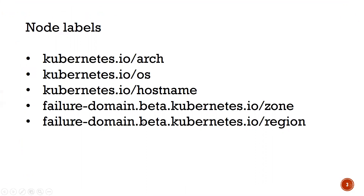The first three labels are architecture, OS, and hostname. These are definitely there for every node when you attach it to the cluster. Depending on how you create your cluster, additional labels may exist — for example, if you used a cloud provider, nodes might have tags like zone or region. Those are cloud-specific, but architecture, OS, and OS name will always be present on Kubernetes nodes. You can see here on my cluster: arch is AMD64, OS is Linux, and the hostname is kubenode.